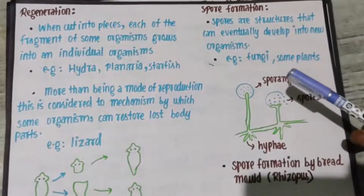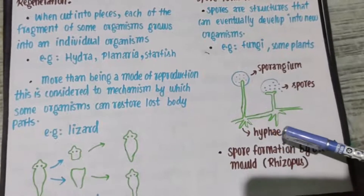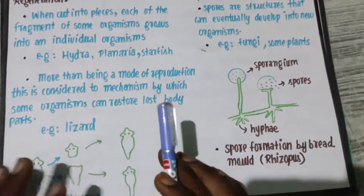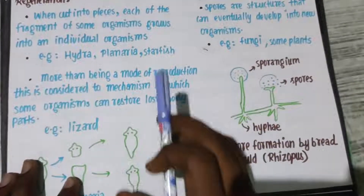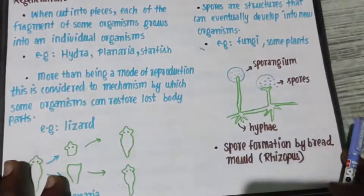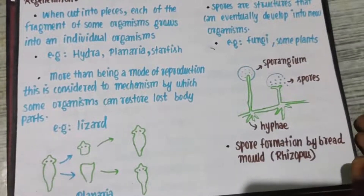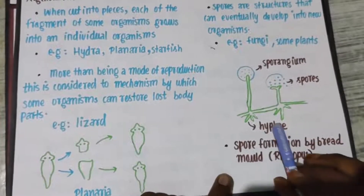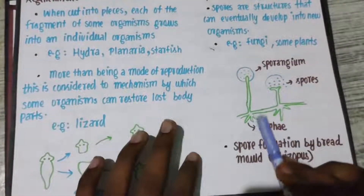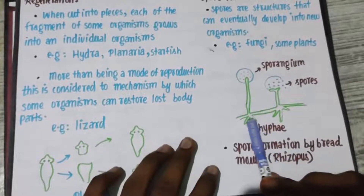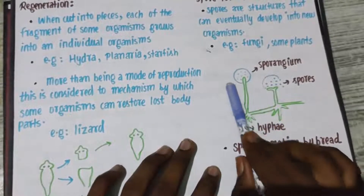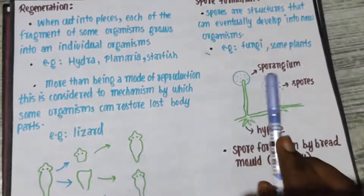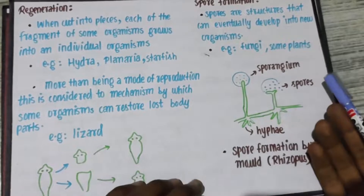For example, fungi and some plants. Now we are going to talk about bread mold. Bread is going to grow because of this fungi — bread mold. This fungi is called Rhizopus. You can see that this is the thread-like structure. The spore is a small black structure.